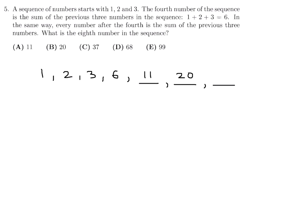And so on. The next number will be the sum of the previous three. So 6 plus 11 is 17, 17 plus 20 is 37. And then finally, the eighth number, which is what they want, sum of the previous three, which is 11 plus 20 is 31, 31 plus 37 is 68. So therefore, number 5, the answer is D.